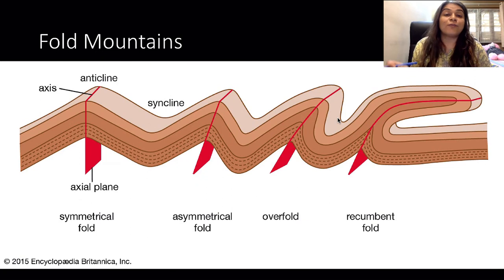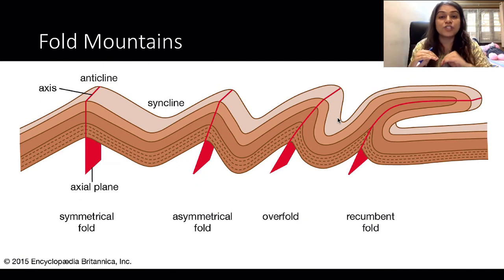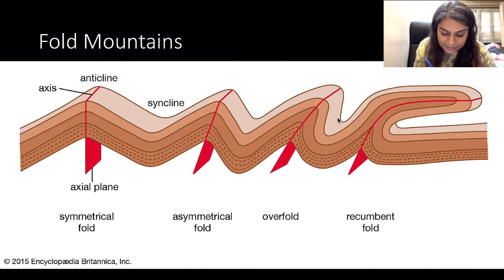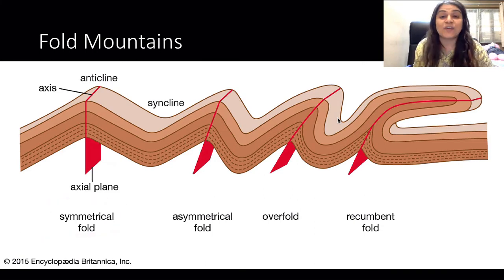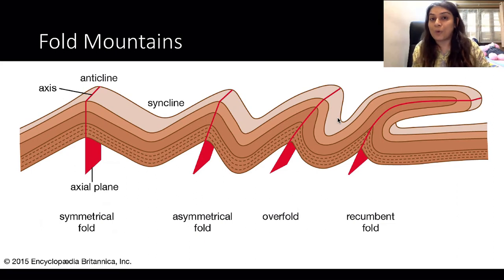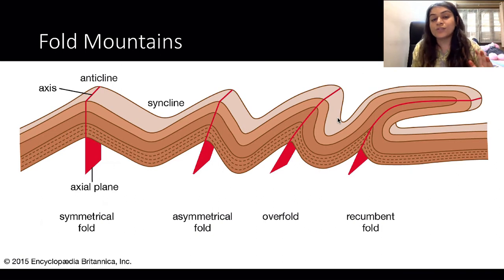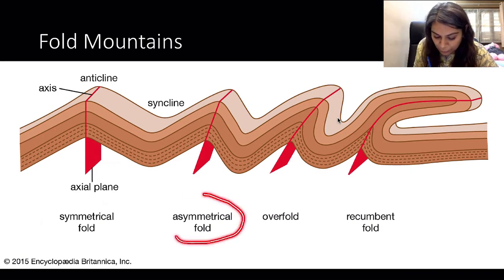In fold mountains we studied how folding happens because of the geosyncline, but there are different kinds of folds to remember. If there is equal force from both sides, a symmetrical fold will happen, but it is very rare. When one side pushes more, an asymmetrical fold happens, which looks bent towards the side where more force is exerted.